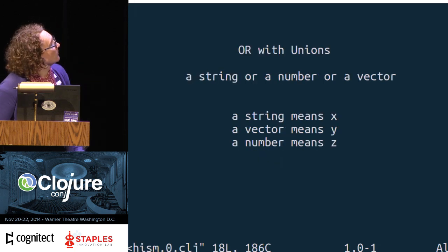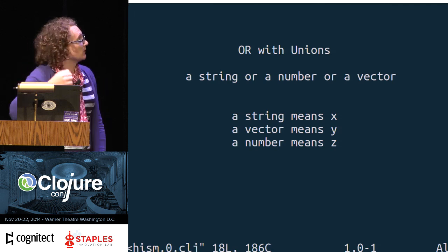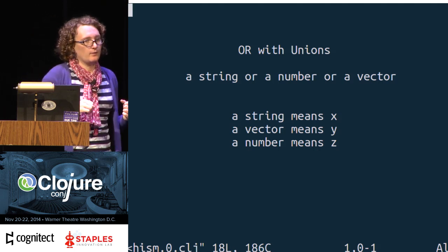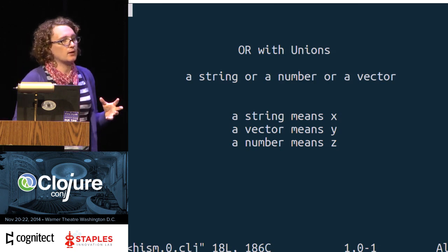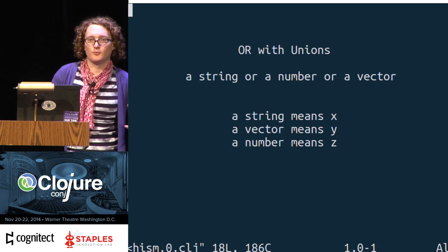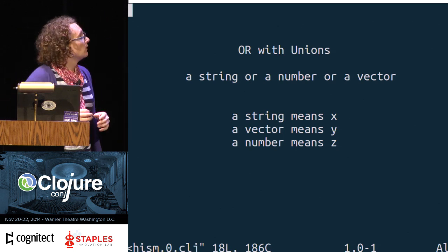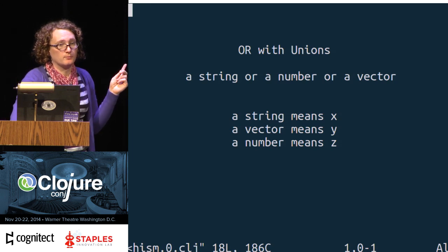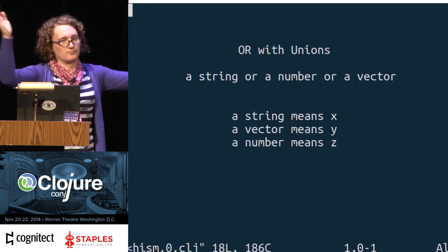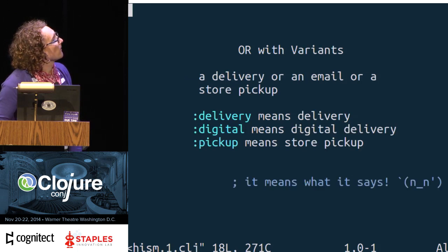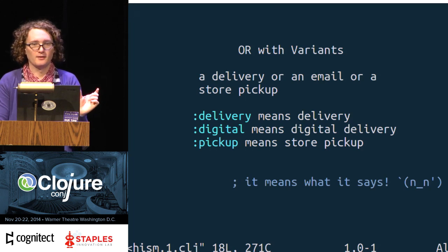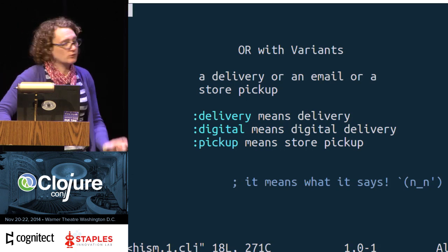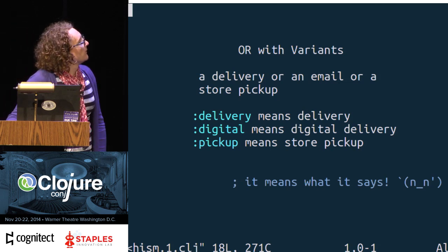I see a lot of code where the documentation says you can pass a string, a number, or a vector, and each has different meanings implicitly defined in the docs. These are unions — raw polymorphism. With variants, on the other hand, you have a tag that tells you semantically what it is. So the meaning is right there in the data structure in the code, just a keyword. It means what it says.